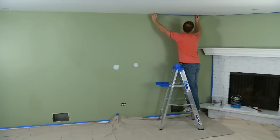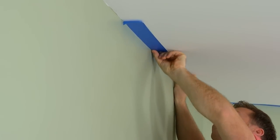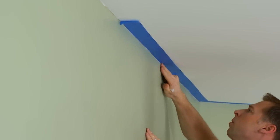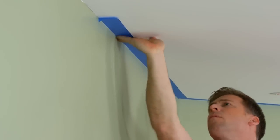Start by applying a long strip of painter's tape to the ceiling surface as close to the top of the wall as possible. Slowly pat the tape down as it sticks to the ceiling to avoid any bubbles or wrinkles.